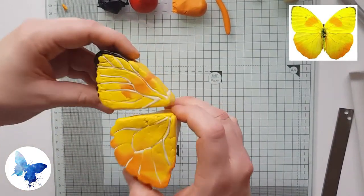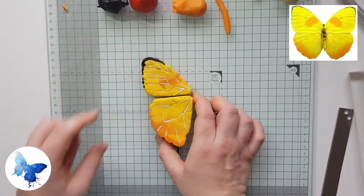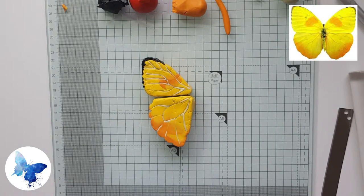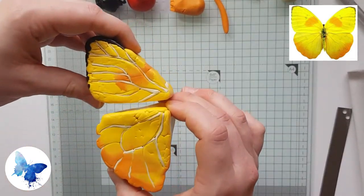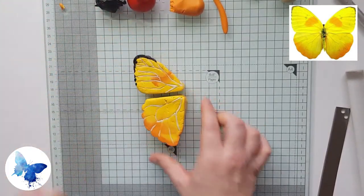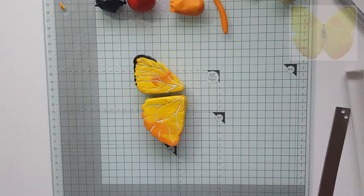And there you have it, the finished cane for the orange barred sulfur butterfly. I really hope you enjoyed this tutorial. I had a lot of fun with Skinner blends in this one. I hope to see you in future videos, until then happy claying!